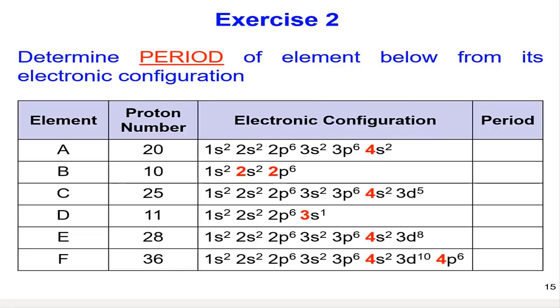Let's look at the electronic configuration of A. The electronic configuration of A is 1s² 2s² 2p⁶ 3s² 3p⁶ 4s², where the highest N value in this electronic configuration is 4. Hence, the period of A is period 4.